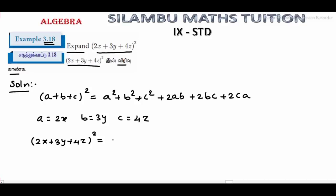It is equal to 2x the whole square first, and 3y the whole square second, plus 4z the whole square in the third.